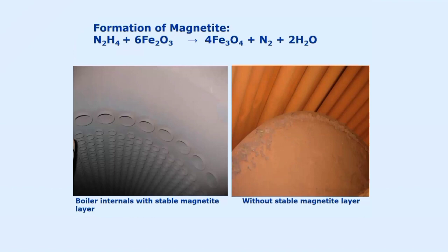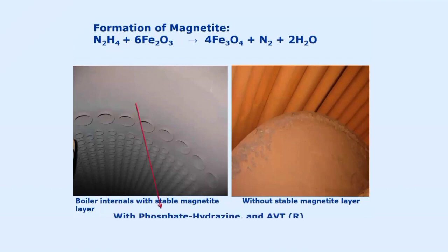Usually, this particular protective oxide is formed by two methods of water treatment process. One is the conventional phosphate hydrazine process and another is the ABTR process — all-volatile treatment reducing condition. With phosphate hydrazine treatment and ABTR treatment, we get the protective oxide of magnetite formed in our system.